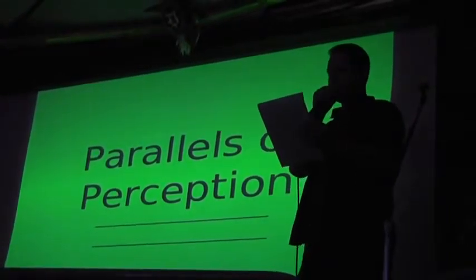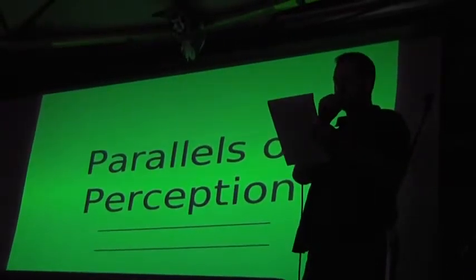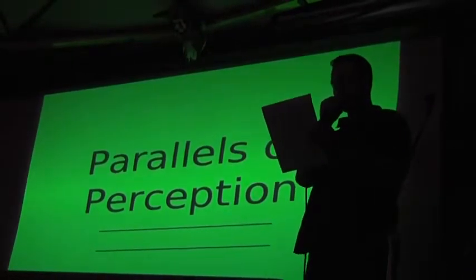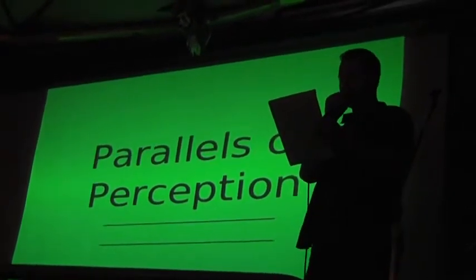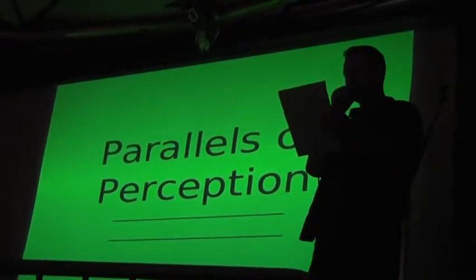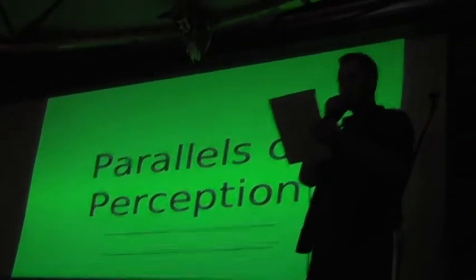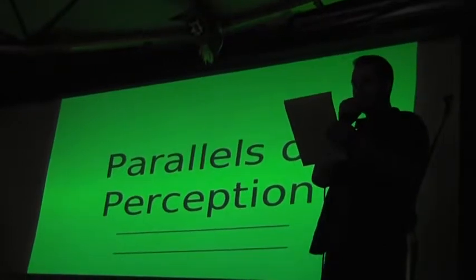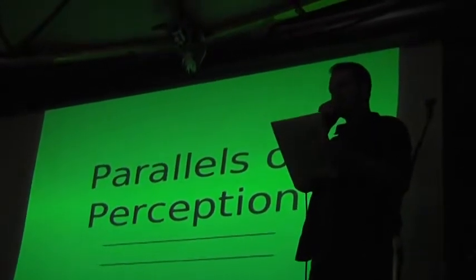For example, superposition. Superposition is a principle of quantum theory which describes a challenging concept about the nature and behavior of matter and forces at the subatomic level. The principle of superposition claims that while we do not know what the state of any object is, it is actually in all possible states simultaneously, as long as we don't look to check.